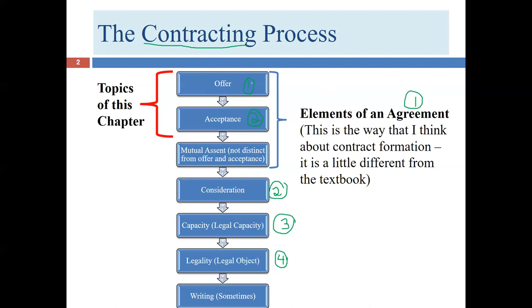A very common mistake students make is thinking that an offer or an acceptance is an element of a contract. Please don't fall into that trap. On a test question asking for the four elements of contract, what I'm looking for is agreement, consideration, legal capacity, and legal object. Students who list offer and acceptance instead miss both legality and agreement. Offer and acceptance are elements of agreement, not elements of contract.